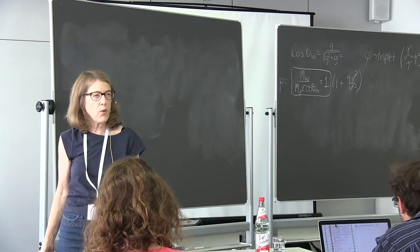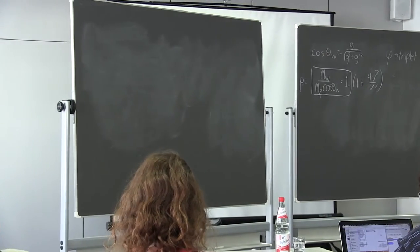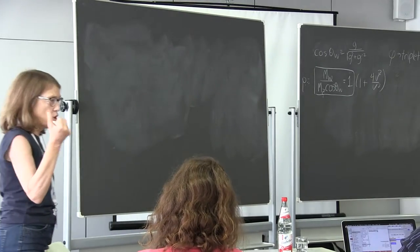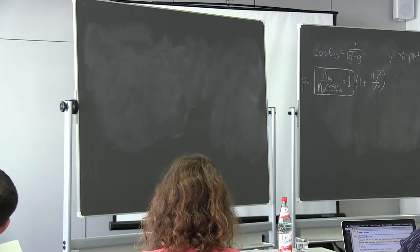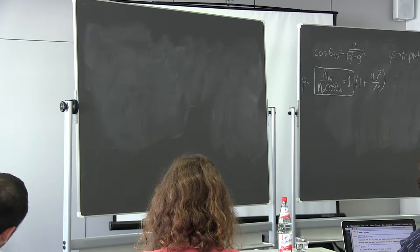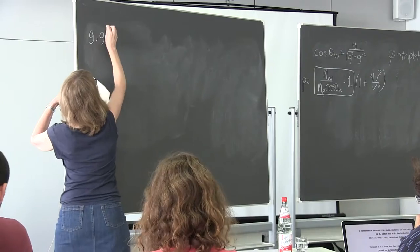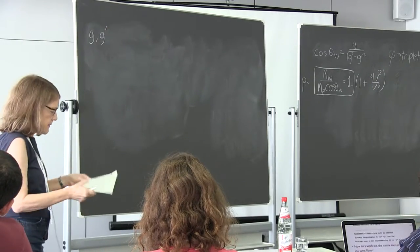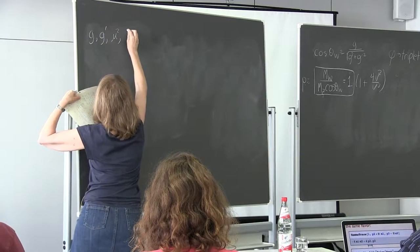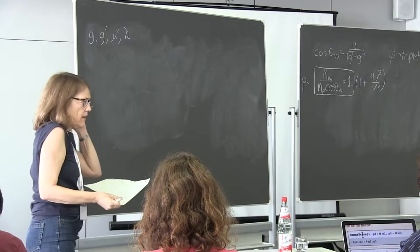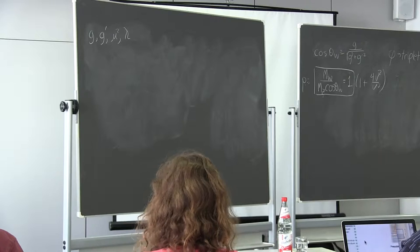Let's count the parameters of this theory — it's a really simple theory. I made one assumption: an SU(2) doublet with μ² negative. In the gauge sector I have g and g', and in the Higgs potential I have μ² and λ — four parameters total, on top of all the fermion masses.